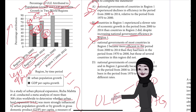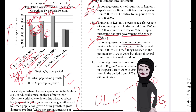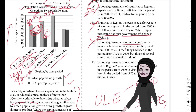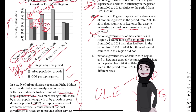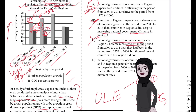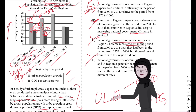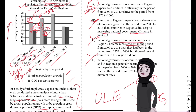Choice C is incorrect because neither the text nor the graph provides information about the relative efficiencies of different governments within Region 2. We can only infer that if GDP decreases, the efficiency of that government decreases, but no direct data about efficiency is available either in the text or in the graph.